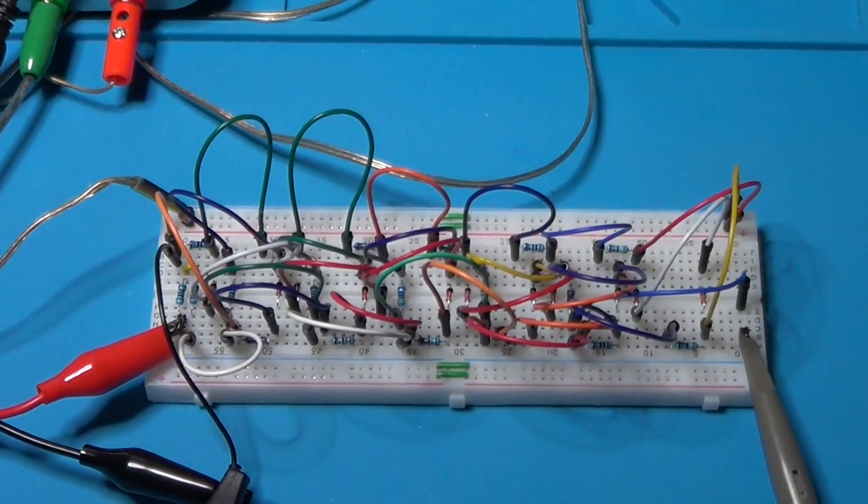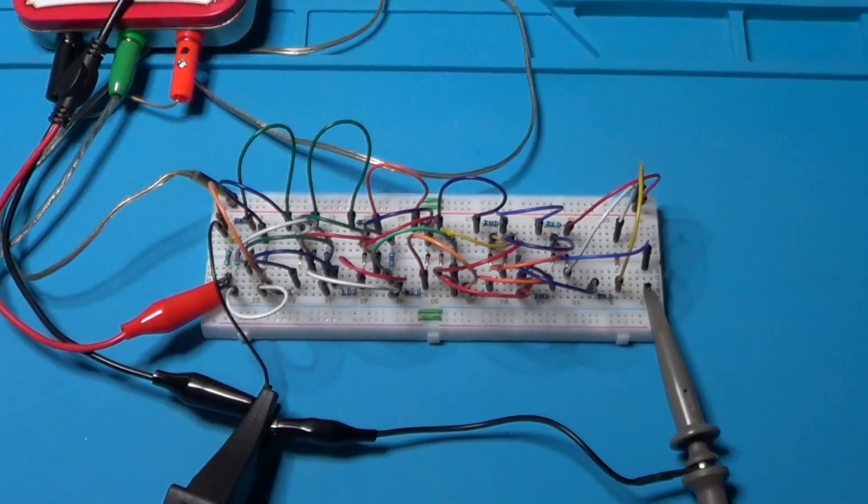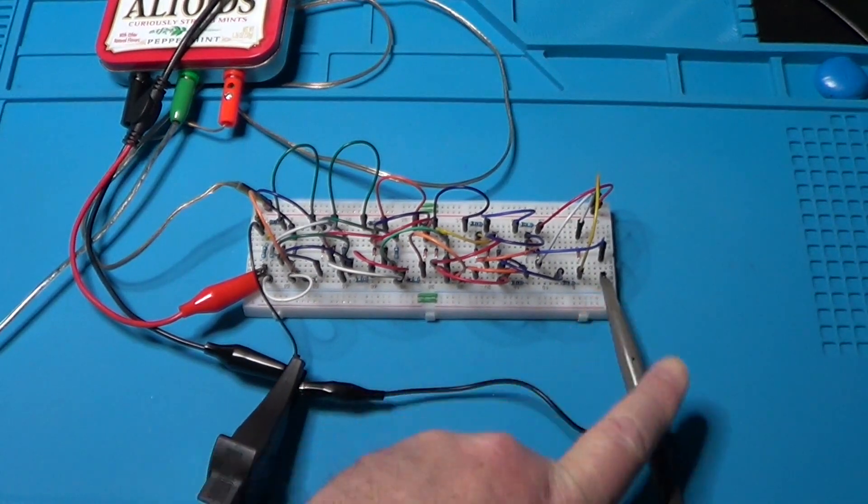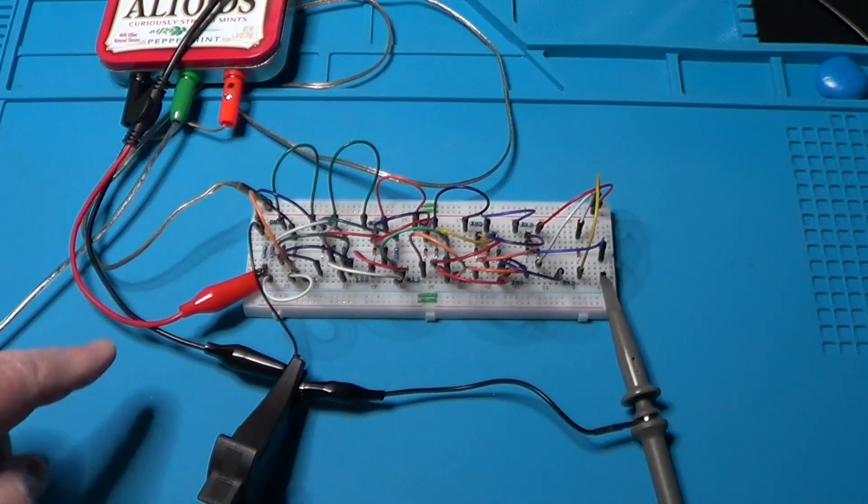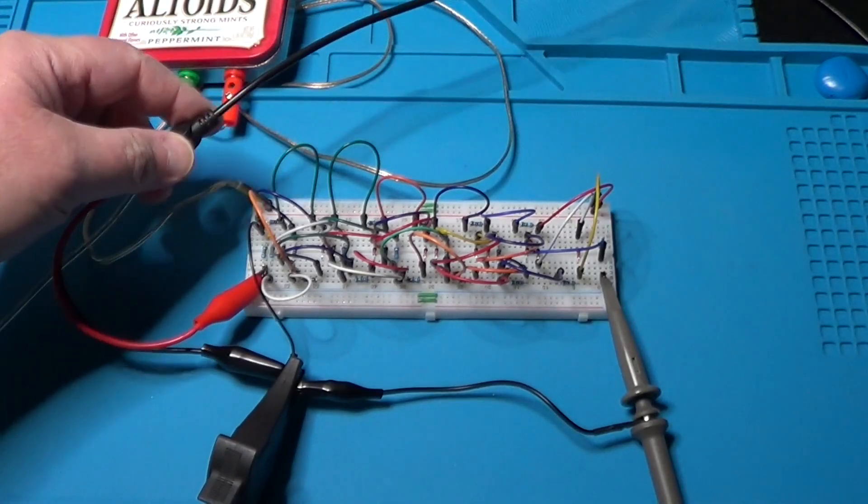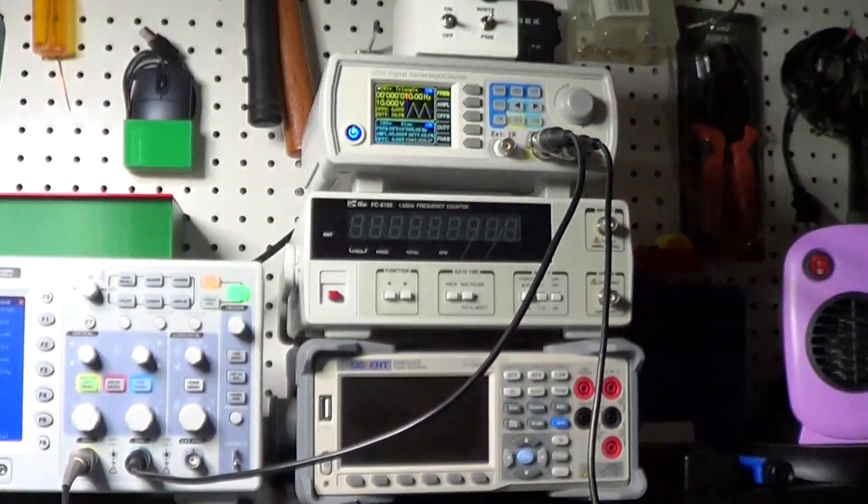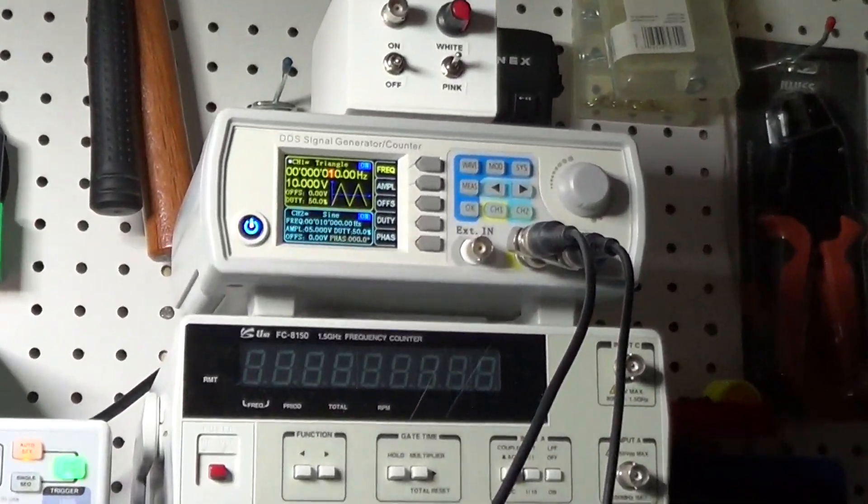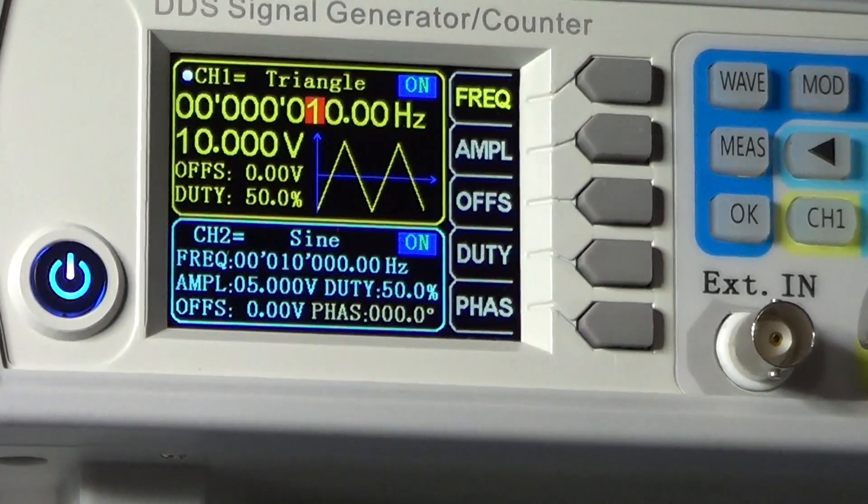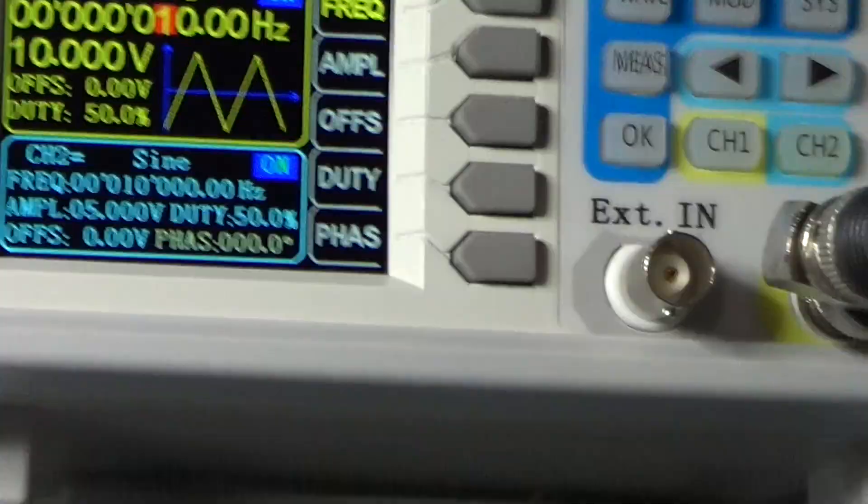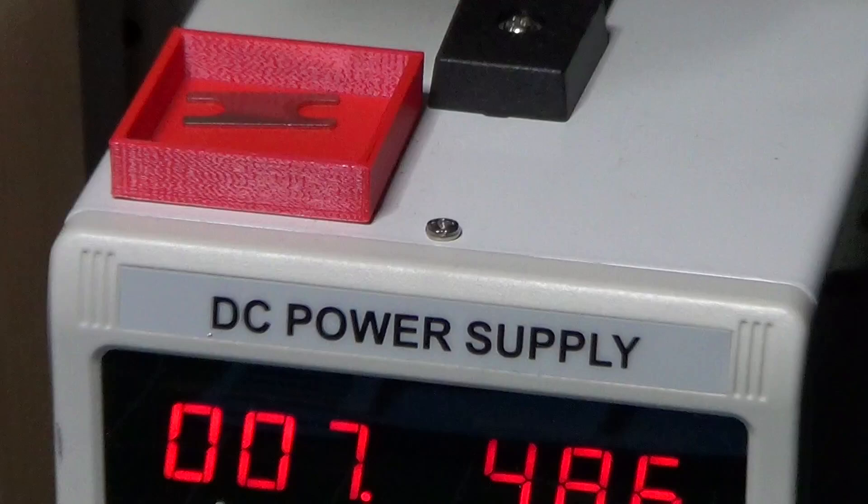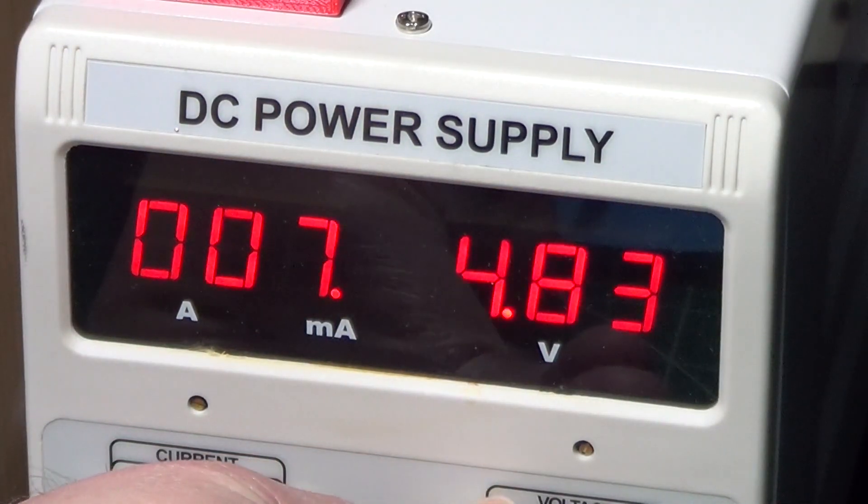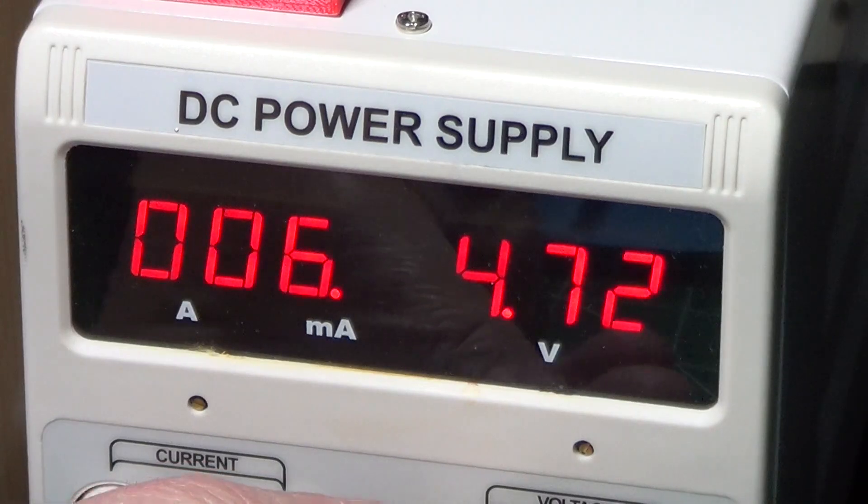And I am back with all the connections already established. Here is the oscilloscope probe to examine the output of the circuit. And the input here is connected to the function generator, currently set to produce a triangular wave with 10V peak-to-peak or plus minus 5V. The frequency is currently set to 10 Hz. Here instead is the power supply, currently set to provide 4.8V, which corresponds to the plus minus 2.4V.